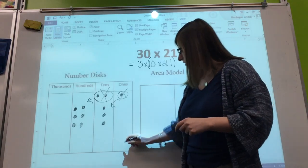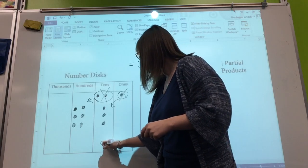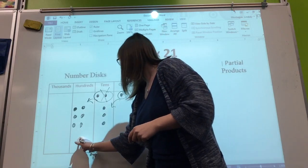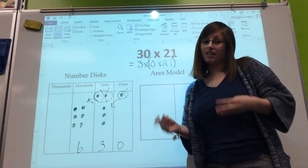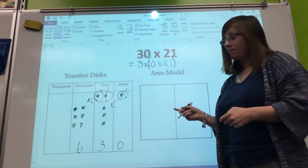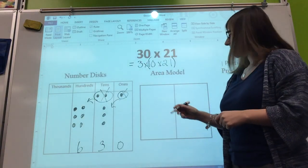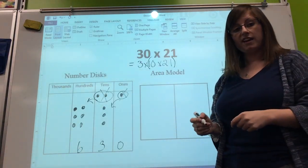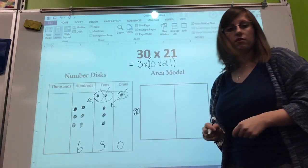If you look, you can see I have one group, two groups, and three groups because I'm multiplying by 3. From here we just have to count up our number disks. I have 0 in the ones place, 3 in the tens place, and 6 in the hundreds place, so my answer would be 630. Now we learned our area model.